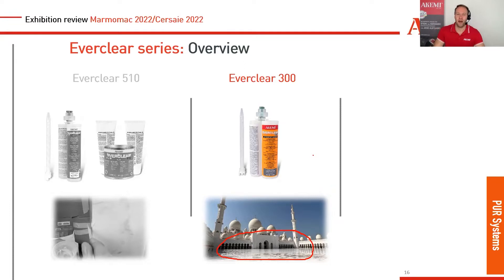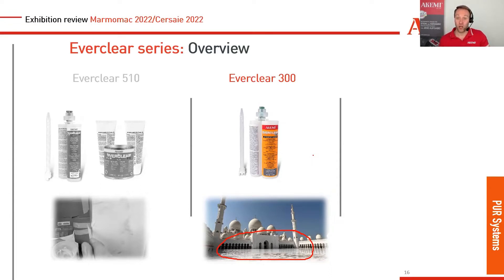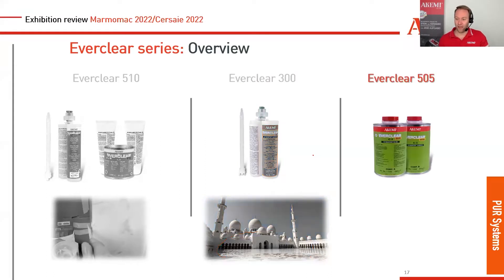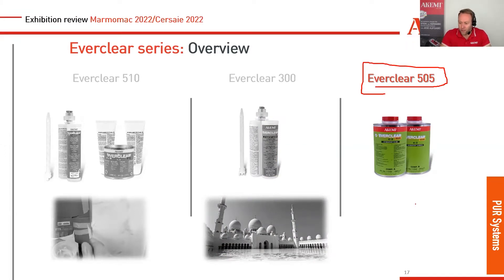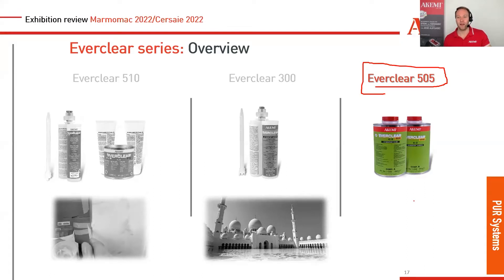Both of these products are mostly a knife-grade consistency. But what if you have very fine cracks, micro holes, pinholes, or small openings you want to fill? You need a liquid product. That brings us to our new product: Everclear 505. This is a 4:2:3 Everclear product — very clear, very transparent, and it stays that way. This is very interesting for all slab manufacturers and for white stones like Calacatta, statuario, thassos — all materials that need crack filling.